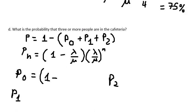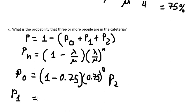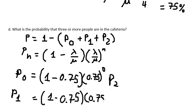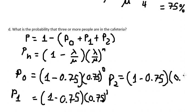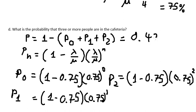We use rho equals 0.75 in the formula. After calculating P(0), P(1), and P(2), we put all those values back into the equation. The result is 0.4219, and this is the answer for question D.